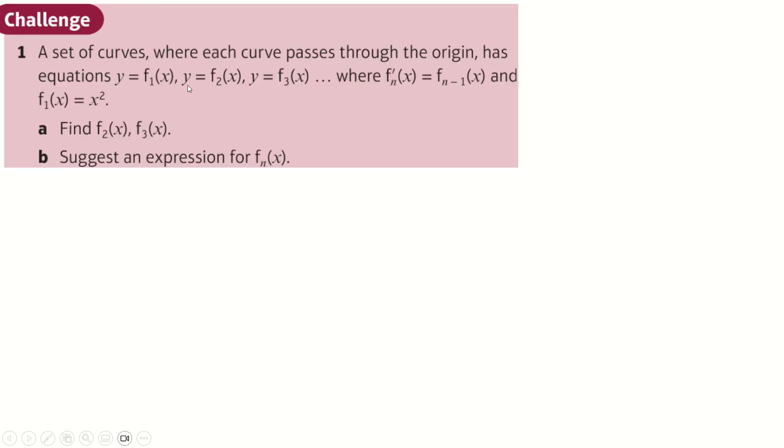Next one is an interesting one. So you've got this kind of recurrence relation, and you're given the first one. So f1 of x is this. Now, that means that f dash 2 of x is f1 of x. So f dash 2 of x is just x squared. We can integrate both sides of this to get f2 of x is x cubed over 3. Plus c, except every curve passes through the origin, so all the plus c's are going to be 0.